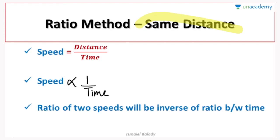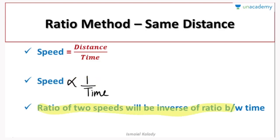The basic equation is speed equals distance by time. When distance is constant, speed is proportional to one divided by time — that is, speed and time are inversely proportional. So if the ratio of two speeds is given, the inverse ratio gives the corresponding times. We apply this concept to the following type of question.